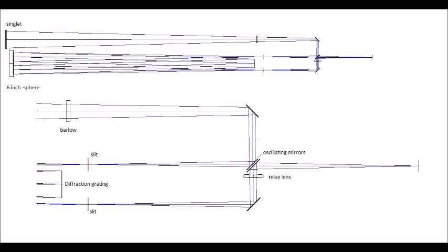It then bounces off of two mirrors and is focused on the first slit of the monochromator. The monochromator is an Ebert monochromator using a 6 inch mirror, 57 inch focal length. It bounces off the mirror once, hits a grating, then bounces back to the mirror and finally comes up to the second slit which isolates the wavelength of interest. The monochromatic light now bounces off another fold mirror through a relay lens and then to the eyepiece after bouncing off of another fold mirror.